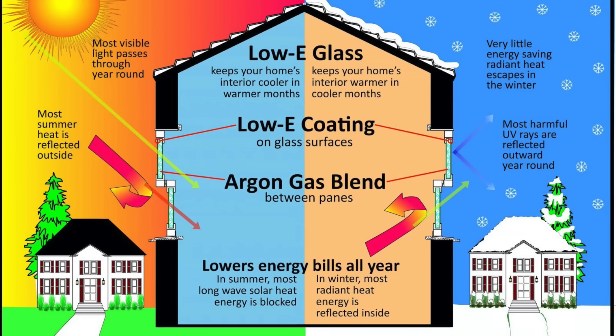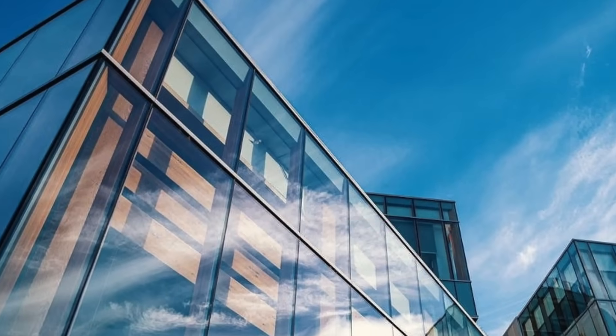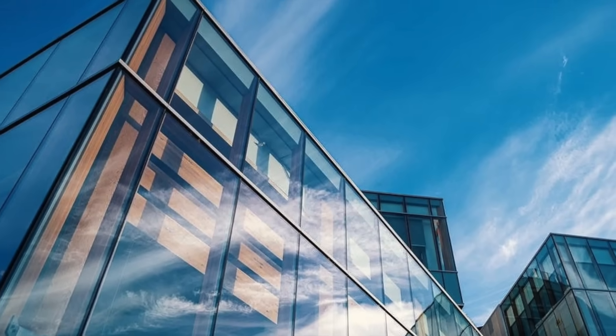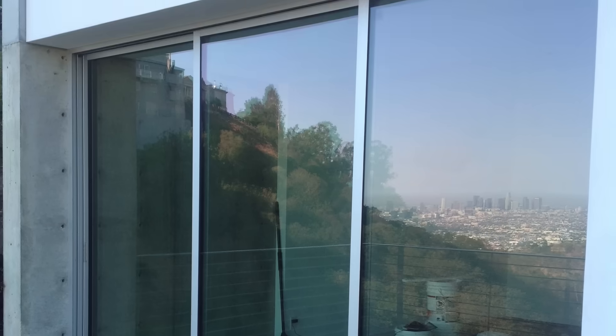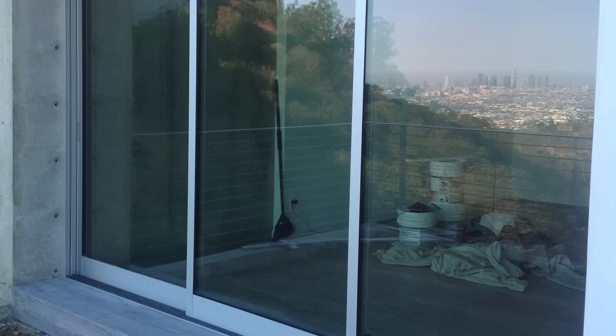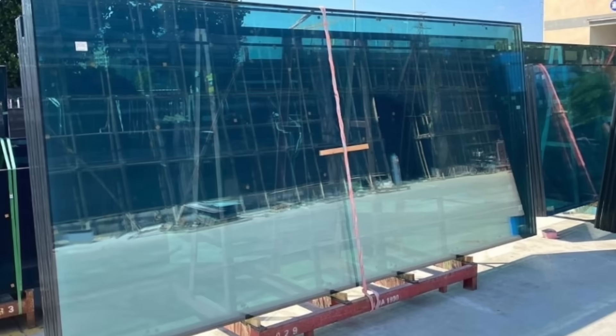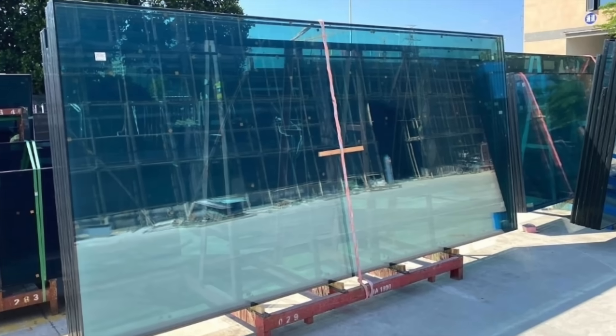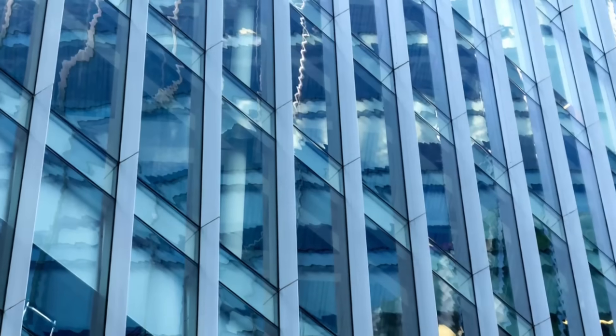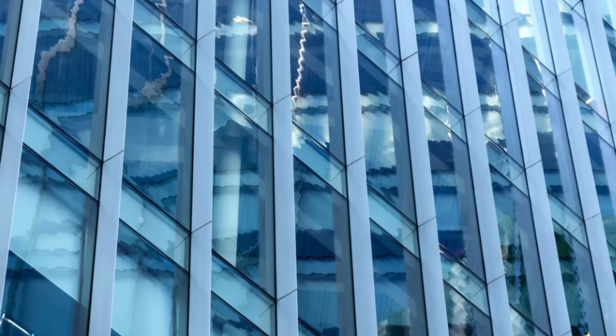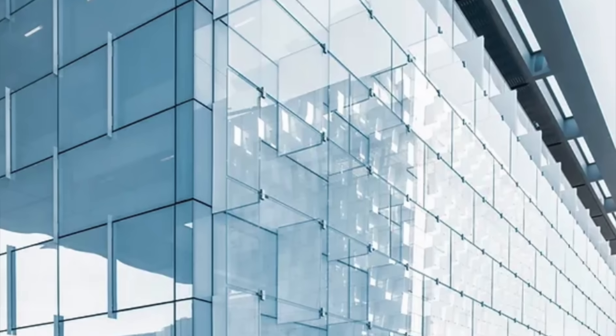It is often used in conjunction with other types of glass, such as laminated or tempered glass, to provide a combination of safety, energy efficiency, and comfort. The use of low-E glass is becoming increasingly common in both residential and commercial buildings as energy efficiency becomes a greater concern.